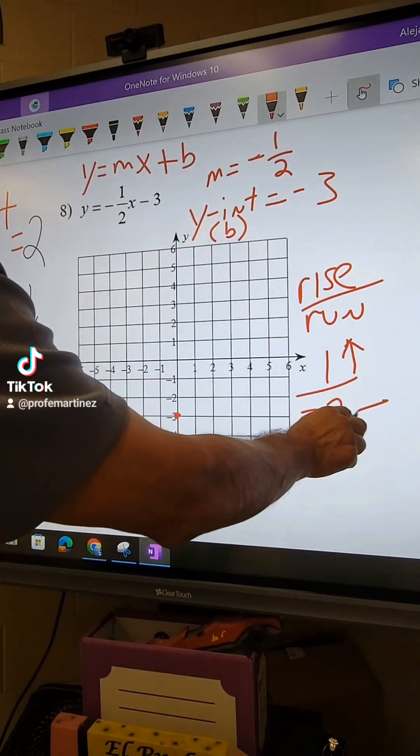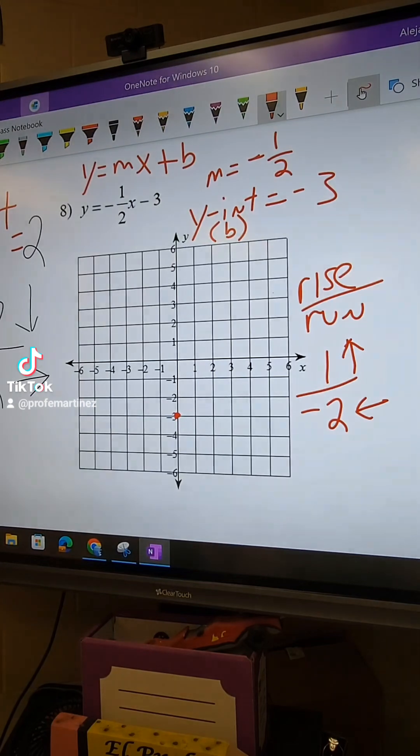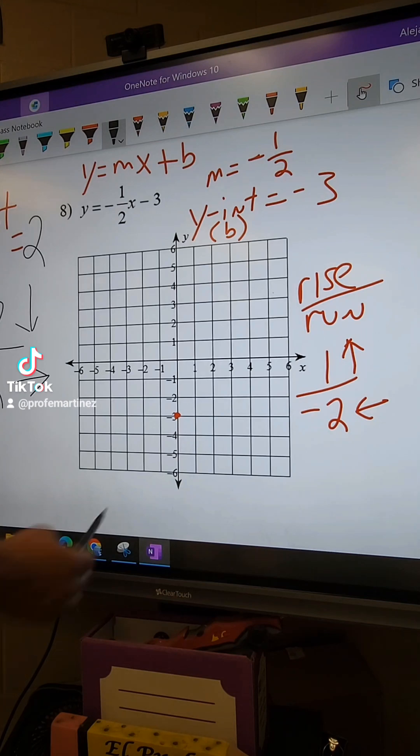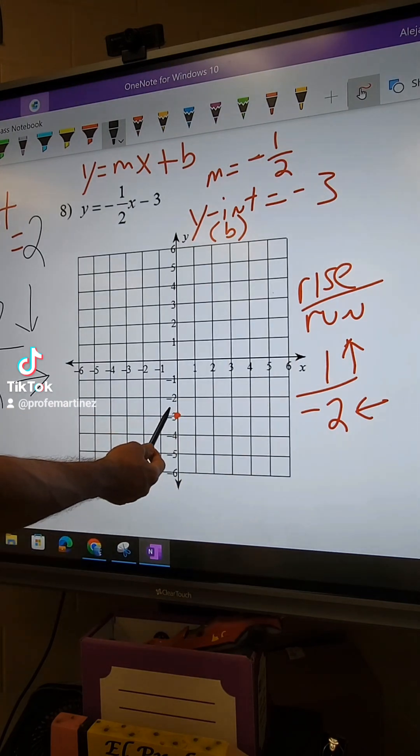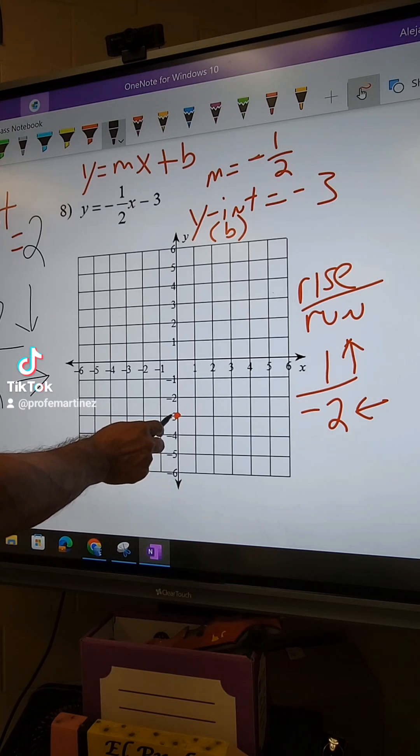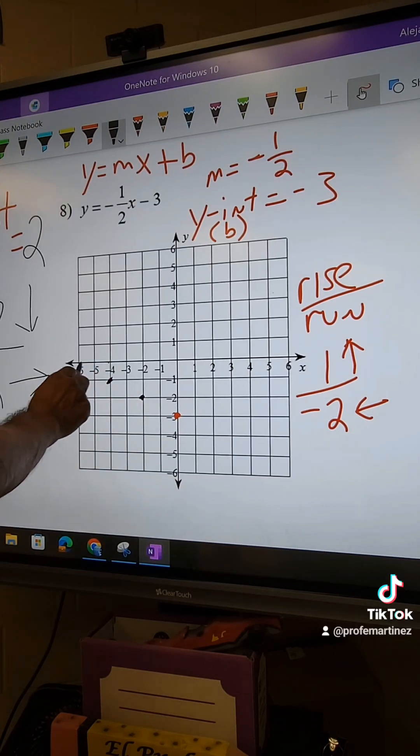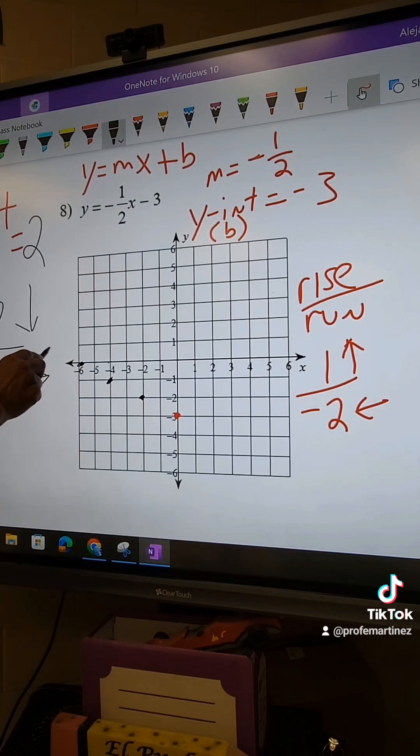And the 2 is negative, so I'm going to go to the left. Okay, and so I'm going to start graphing my points with the slope. So from here, from the y-intercept negative 3, we're going to start. Okay, one and then two to the left. And I can keep going, so you can see one and two to the left, one and two to the left. Okay, and you can make more points, and that's how you would graph using the slope and the y-intercept.